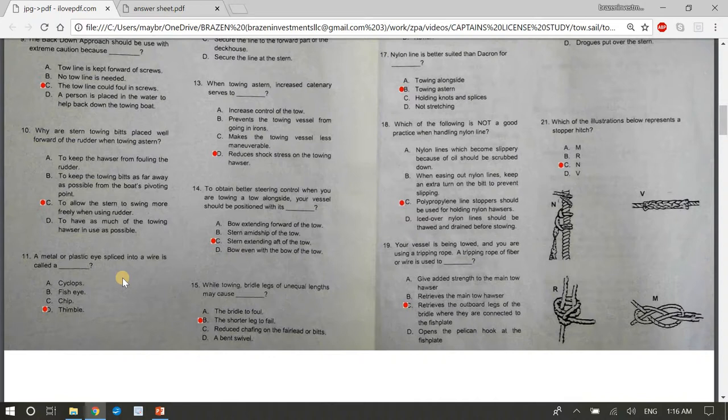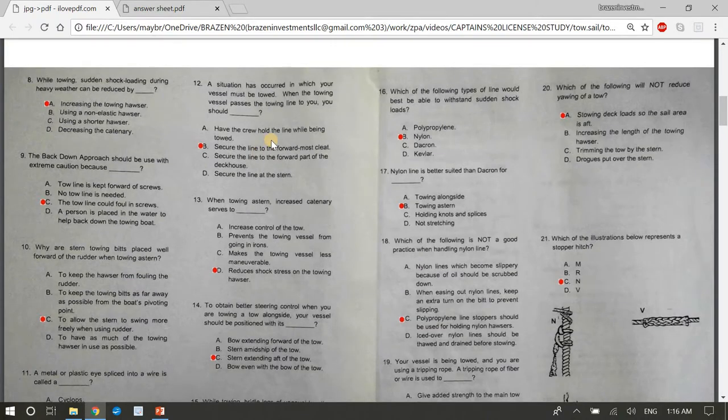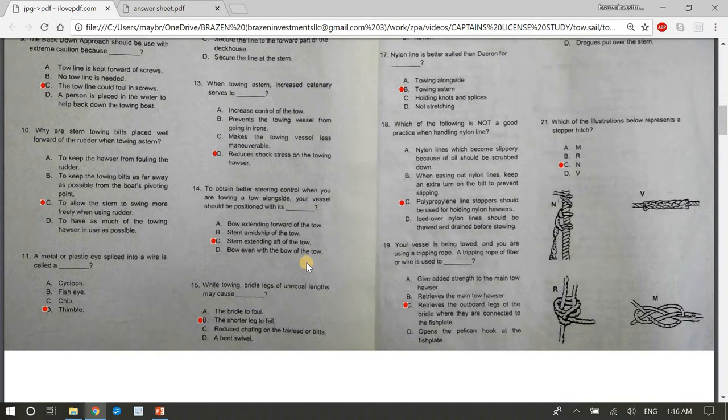Eleven, a metal or plastic I spliced into a wire is called a D, thimble. Twelve, a situation has occurred in which your vessel must be towed. When the towing vessel passes the towing line to you, you should blank. The answer is B, secure the line to the forward most cleat. Thirteen, when towing astern, increased catenary serves to, the answer is D, reduces shock stress on the towing hauser. Fourteen, to obtain better steering control when you are towing a toe alongside, your vessel should be positioned with its blank. The answer is C, stern extending aft of the toe. The stern extending aft of the toe when vessels are alongside.